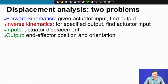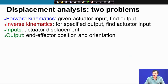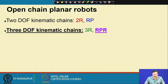These are the two problems of displacement analysis we will discuss today. The forward kinematics problem: the actuator inputs are given and the end effector position and orientation are to be found. The reverse is the inverse kinematics problem: the end effector position and orientation are given and we have to find the actuator inputs — the throw or angular displacement of the actuators. Today we look at the 3-degree-of-freedom planar RPR chain: revolute-prismatic-revolute manipulator.